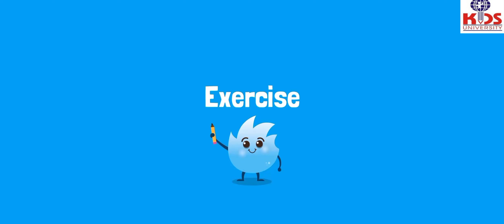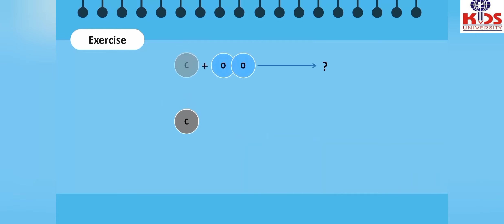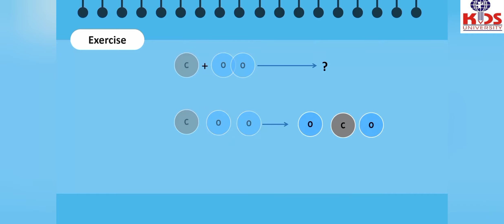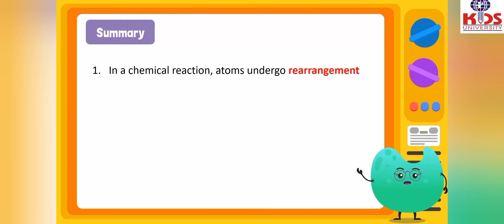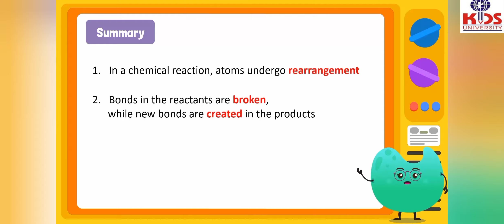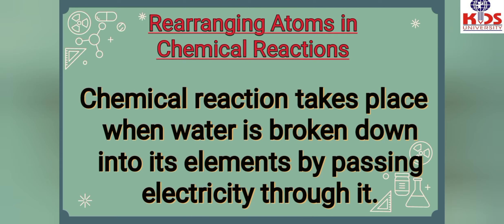Now do an exercise: can you rearrange these atoms to form a carbon dioxide molecule? Two oxygen atoms break their bond and form new bonds with a carbon atom. These new arrangements result in the formation of a carbon dioxide molecule. Summary of chemical reaction: atoms undergo rearrangement, bonds in the reactants are broken while new bonds are created in the products, and no new atoms are created or destroyed in the process.